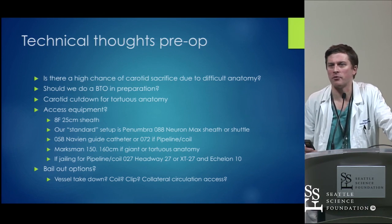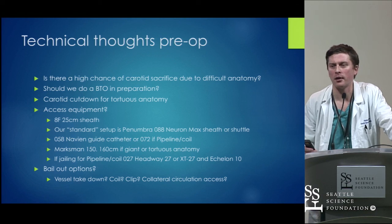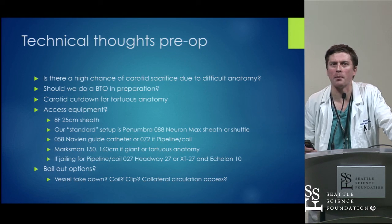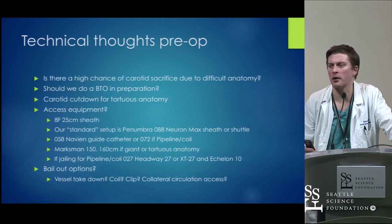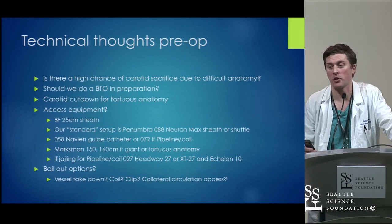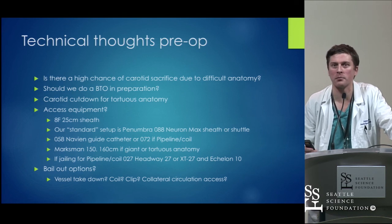Our standard setup is an 8 French long sheath — I use the Penumbra 088 Neuron Max; some use a shuttle — then the standard Navien and Marksman setup, which you'll see in the lab shortly. We also think about bailout options: can I sac the vessel, coil it off, coil the aneurysm, do a balloon assist or stent assist? Should I quit and clip the aneurysm and come back another day? Is there any other collateral access to the aneurysm from a better angle?